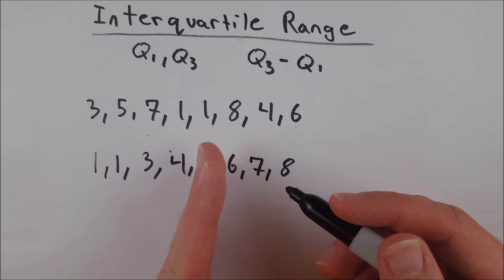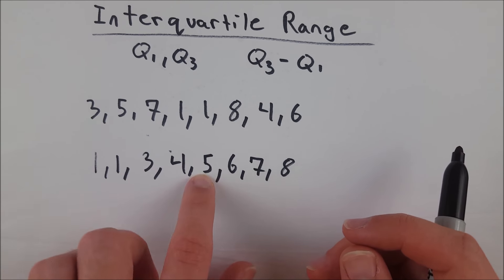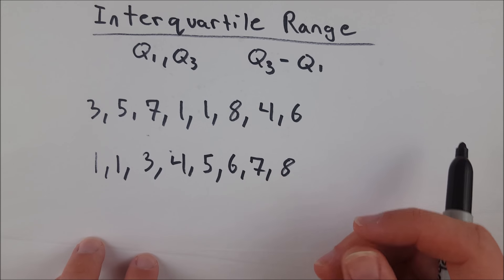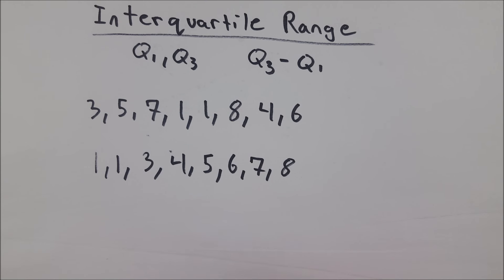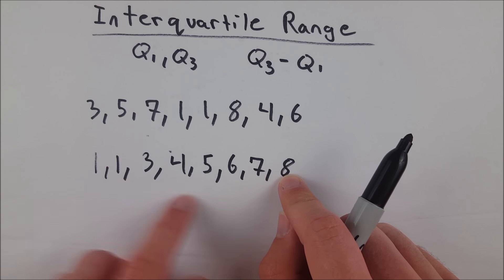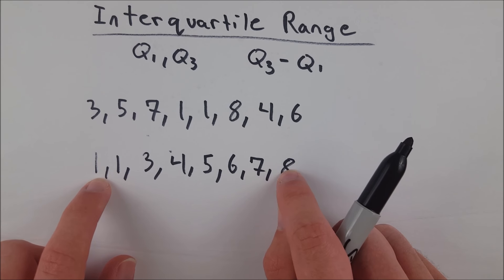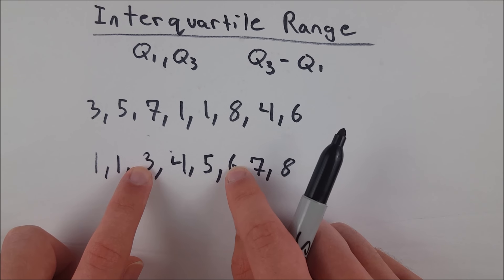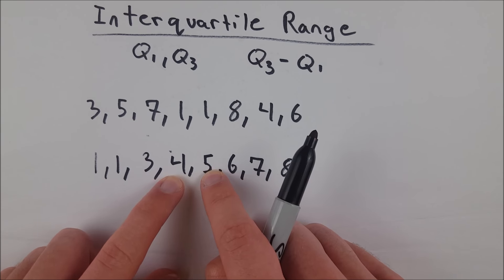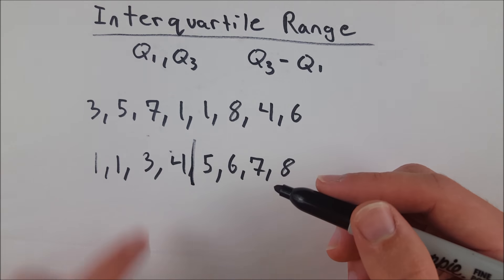Now we want to split the data basically in half, so we have 50% to the left of our split and 50% to the right of our split. So you do this basically by finding the median. You can find the median of a small set of data just by counting in from the endpoints. So you go in one, two, three, and then you see we've got two numbers here in the middle. So we'll put our split between the two numbers in the middle.